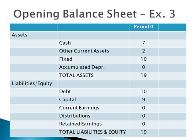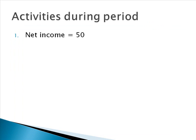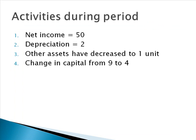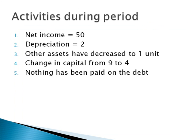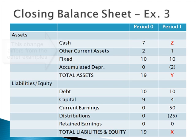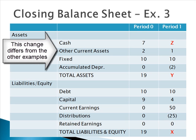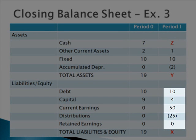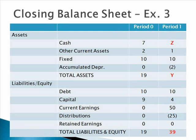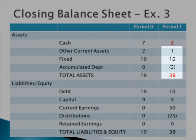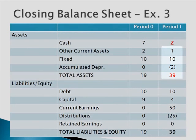The third example is going to be slightly different. We'll assume that other assets have decreased from a value of 2 to 1, and there's also a change in capital from 9 to 4. The activities on this opening sheet are: net income of 50, depreciation of 2, other assets decreasing to just 1 unit, change in capital from 9 to 4, and this time we'll pay nothing on the debt. Plugging those numbers into column 1, X, Y, and Z are unknown. Adding together the liabilities and equity section, we find X is equal to 39. Y must also equal 39, and working backwards, the value for Z must equal 30.